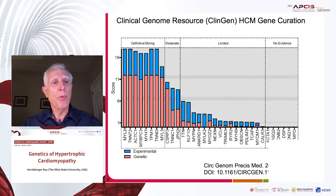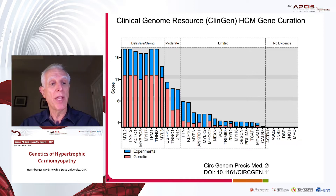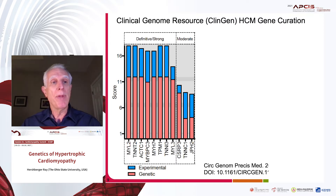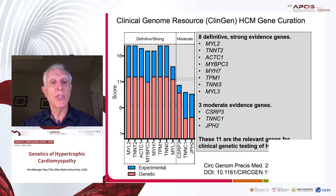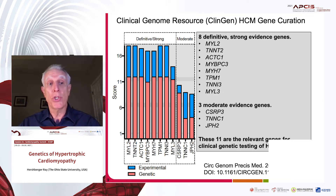These are the results of the ClinGen HCM gene curation as shown — all of the genes that were screened. The blue is the experimental evidence and the pinkish red is the genetic evidence. Let me drill down on the definitive, strong, and moderate genes. There were eight definitive and strong evidence genes as shown here. The genetic evidence was really very strong, representing the majority of the evidence.